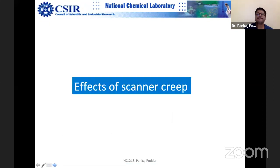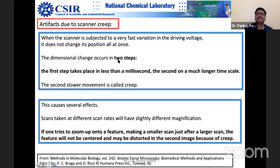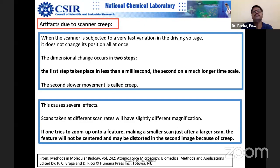Scanner creep happens because when voltage is applied, the dimensional change happens in two steps: one step takes less than a millisecond (fast movement), and the second step is a very slow continuing movement — this is the creep. So when you zoom from 50 microns scan size down to 1 micron immediately, you will have creep problems. You should reduce the scan size gradually: from 50 microns to 20 microns, then to 10 microns, then to 1 micron — slowly reduce so the scanner has time to settle.